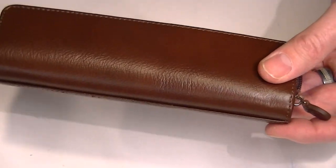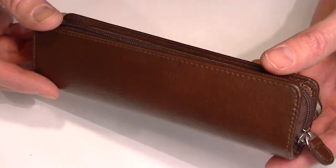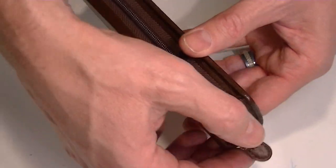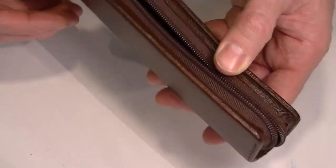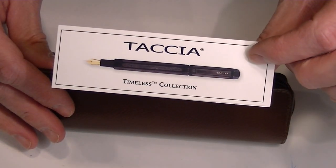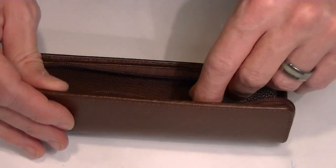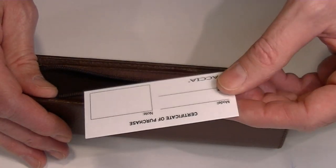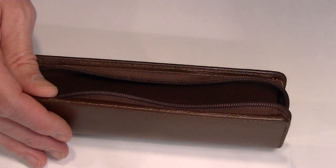Inside, the pen comes with a nice brown leather carrying case which holds one pen. You can unzip that, and inside we have the pen as well as information about the Timeless Collection and the Certificate of Purchase that comes with the pen.